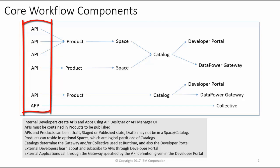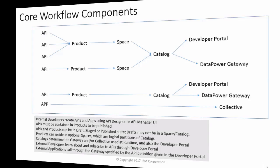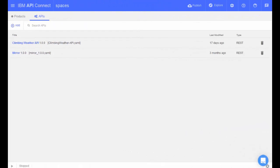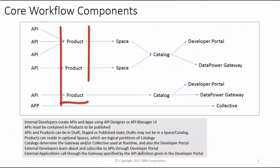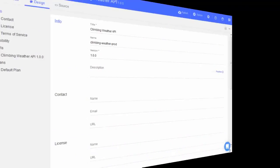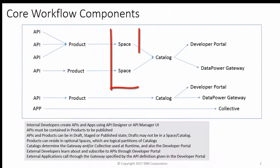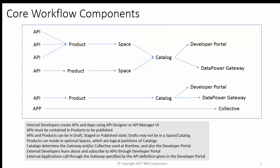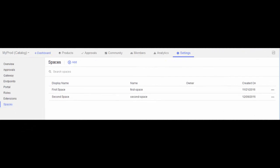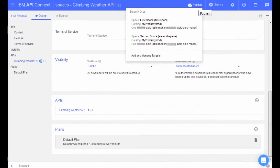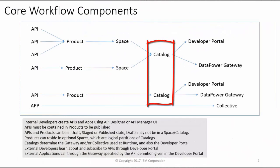API construction begins by creating draft APIs. This is typically done using the API designer, which runs on the workstation of the engineer creating the API. The APIs are included in products, which also have plans. Products can be published through spaces. Spaces are optional within a particular catalog — they are useful for maintaining separation of work between teams when they are working on more than one API at a time. Spaces are configured at the catalog level, and once they are configured, designers must choose a space through which to publish. All of the published products end up as part of a catalog.